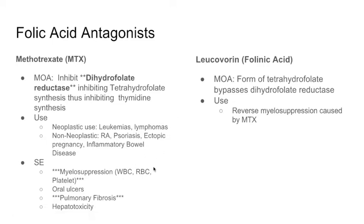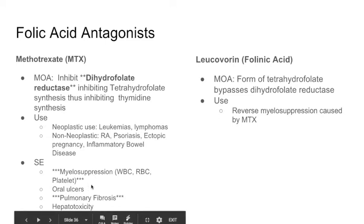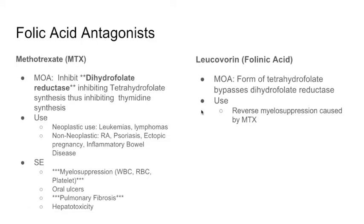Because methotrexate causes myelosuppression and ulcers — due to cells lacking tetrahydrofolate — they developed leucovorin (folinic acid), a form of tetrahydrofolate that bypasses dihydrofolate reductase. Leucovorin is used to reverse myelosuppression caused by methotrexate. In chemo regimens, you give a high dose of methotrexate followed by leucovorin. It doesn't affect methotrexate's efficacy because cancer cells don't utilize leucovorin the same way.